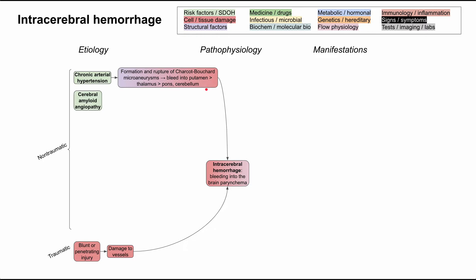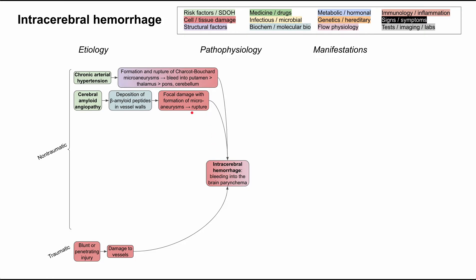The most common cause of non-traumatic intracerebral hemorrhage in patients over 60 is cerebral amyloid angiopathy. The pathophysiology is similar to Alzheimer's disease — you have deposition of an errant protein where it shouldn't be. In this case, beta amyloid peptides deposit in the vessel walls, causing focal damage with formation of microaneurysms, which can rupture and cause bleeding into the brain parenchyma.